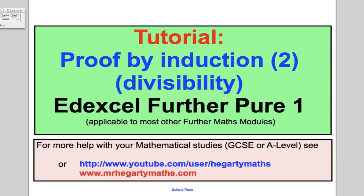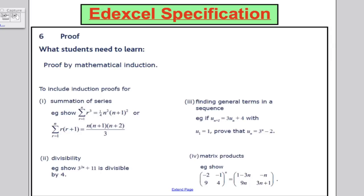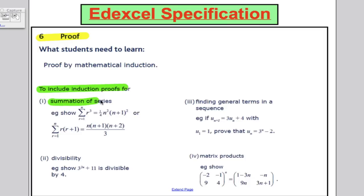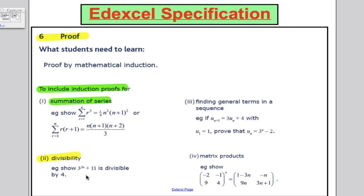Hi there and welcome to another tutorial for the EdXL Further Pure 1 Maths course. This is my second video on proof by induction, and in particular we're focusing on divisibility proofs in this lesson. Looking at the EdXL specification, we're in proof, and so far we have done proofs for summing series and now we're going to move on to divisibility proofs, i.e. how do you show an expression like 3 to the power of 2n plus 11 is divisible by 4.